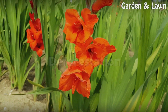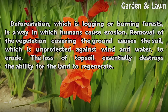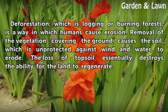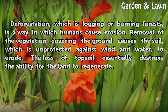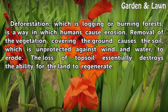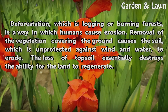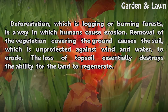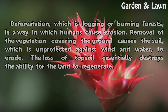Deforestation, which is logging or burning forests, is a way in which humans cause erosion. Removal of the vegetation covering the ground causes the soil, which is unprotected against wind and water, to erode. The loss of topsoil essentially destroys the ability for the land to regenerate.